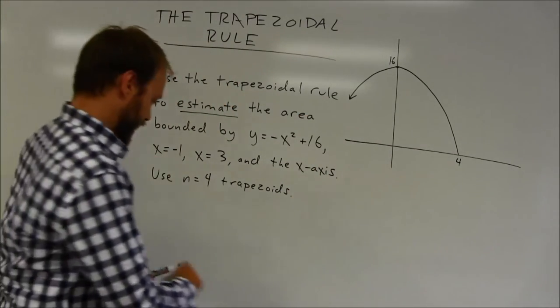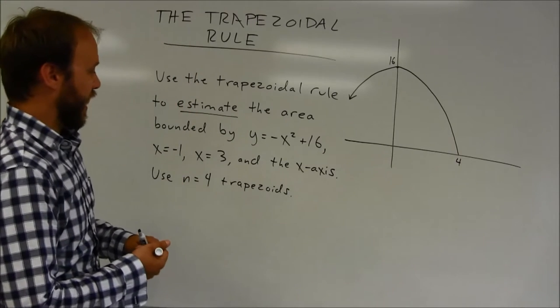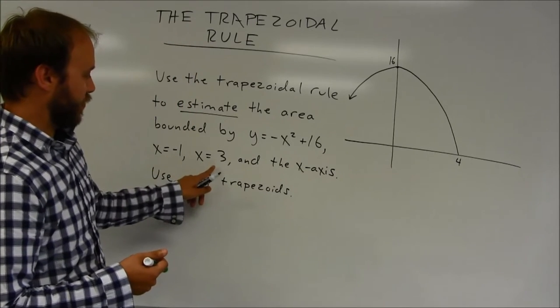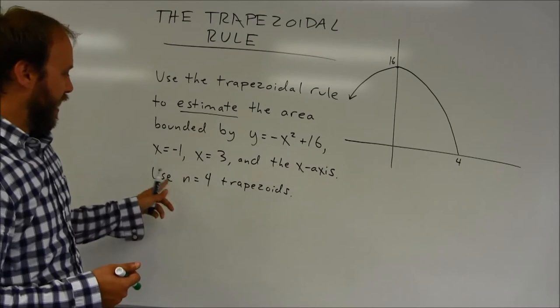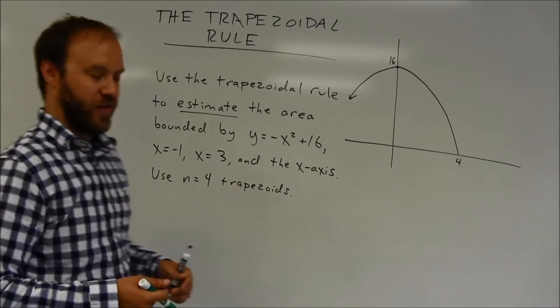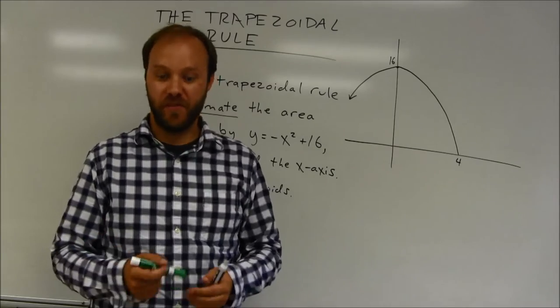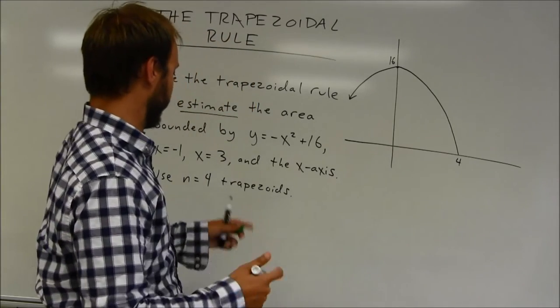X equals negative 1, and I haven't marked that in the diagram yet, but that's a vertical line passing through negative 1. X equals 3 and the x-axis. Then I'm going to use n equals 4 trapezoids. So you can have different numbers of trapezoids depending on what the problem asks you to do.